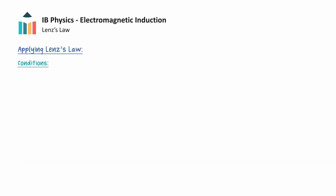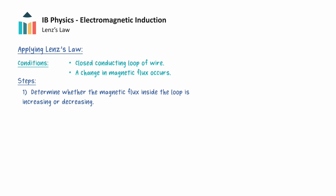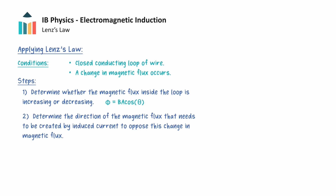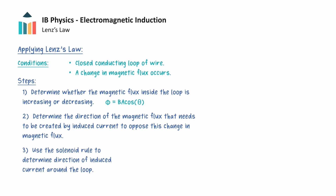In order to use Lenz's law, we need to have a closed conducting loop of wire with some given area, and the change in magnetic flux needs to be taking place. When these conditions are satisfied, we can use a three-step process to determine the direction of the induced current. To begin, we have to determine whether the magnetic flux inside the loop is increasing or decreasing, and we do this by using the magnetic flux equation that we introduced earlier in this video. After this, we need to determine the direction of flux that needs to be created by the induced current to oppose this change in magnetic flux.